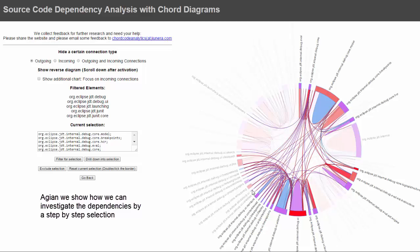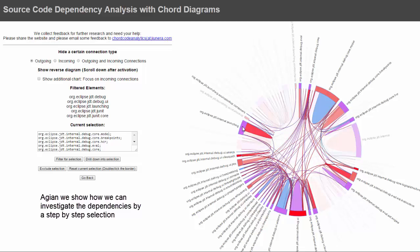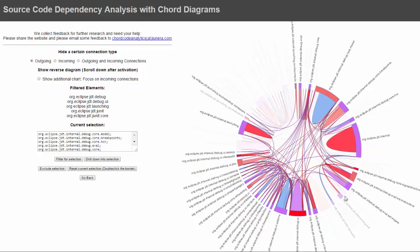I start selecting step by step all the packages at this hierarchy level that call each other, to see which components belong together and could be separated into their own component or a component at a higher level. Once nothing new appears, I'm done and can see all these components need each other. So if I want to deploy this model package, I get this dependency with nearly all the other packages.